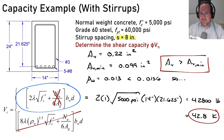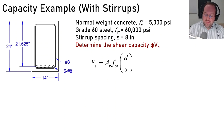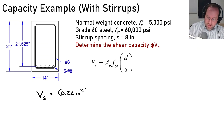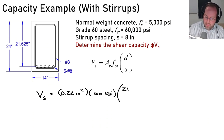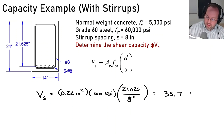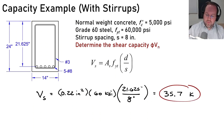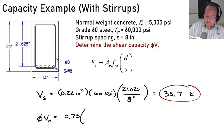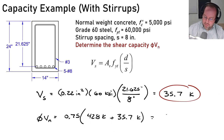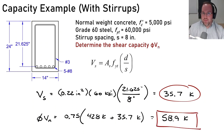Now adding the steel contribution: V_s = A_V × f_yt × d/s = 0.22 in² × 60 ksi × (21.625/8) = 35.7 kips. Finally, the design capacity is phi*V_n = 0.75 × (42.8 + 35.7) = 58.9 kips — a great improvement over the 24 kips from the 24-inch stirrup spacing.